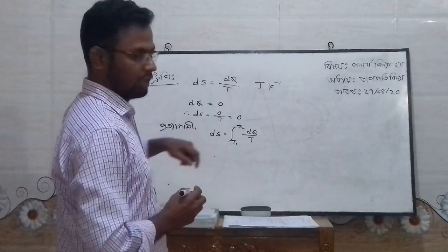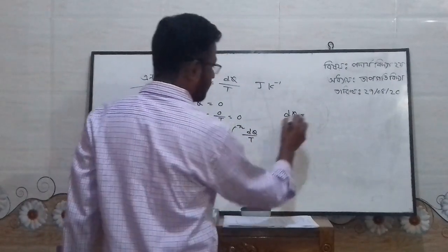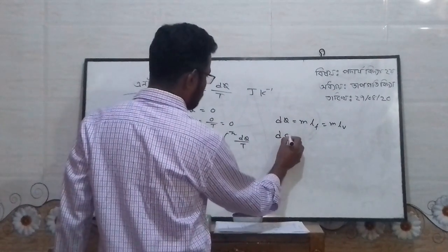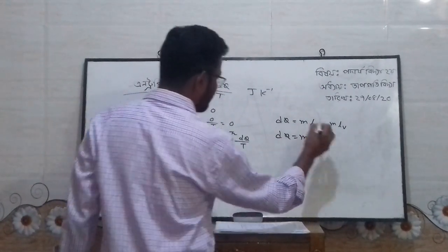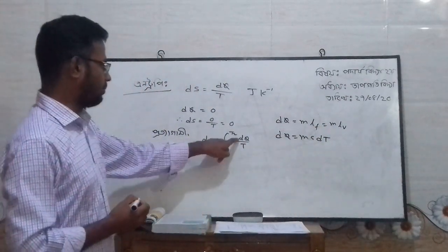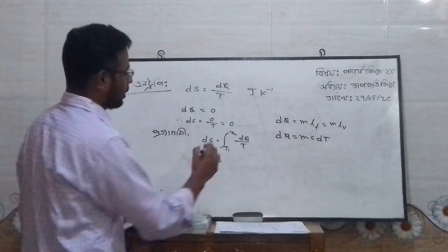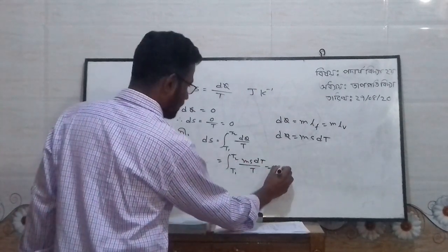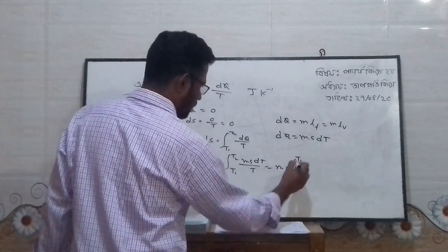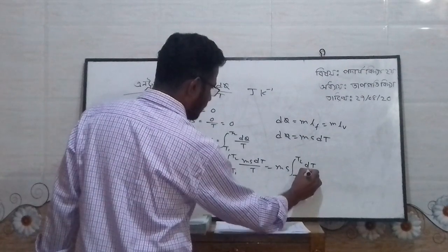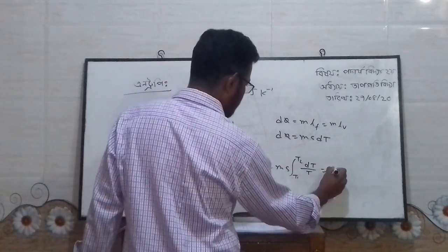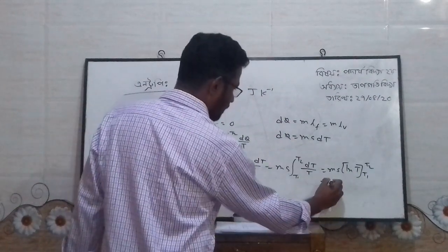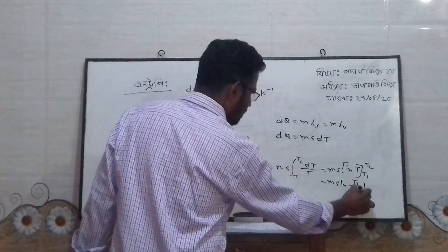I will be able to use this as well as dQ/T. If you do not know the measure of MLF, then you will be able to use MLV. If you do not know the measure of MLV, the measure of MLV is called MSDT. We can use it as MSDT. You see, this is T1 to T2: the integral of ms dT by T, where T1 to T2 equals ms ln T, with upper limit T2 and lower limit T1. So, ΔS = ms ln(T2/T1).